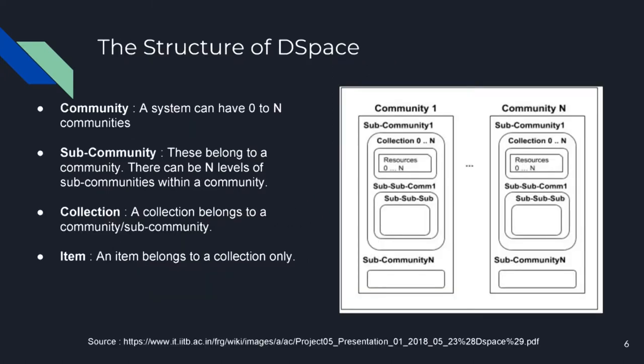This is the structure of DSpace, which I will explain because the next few slides use this structure for the mapping of DSpace and the collaborative communities. In DSpace there are communities, sub-communities, collections and items. The system can have 0 to N communities, and those communities can have 0 to N sub-communities, up to the Nth level — meaning sub-communities of sub-communities. Collections belong to a community or sub-community, and all items or resources and articles are inside collections only.